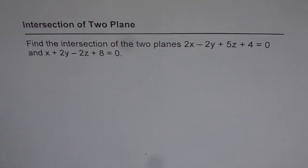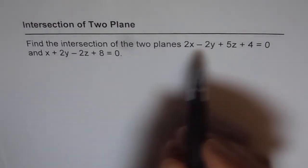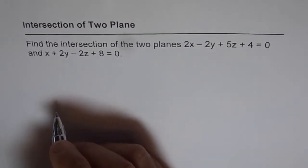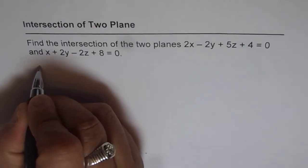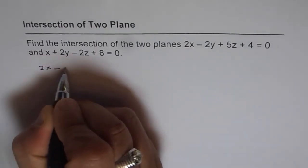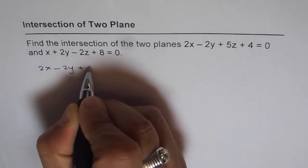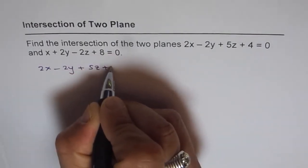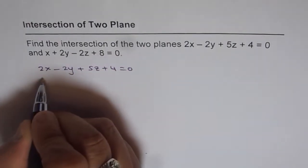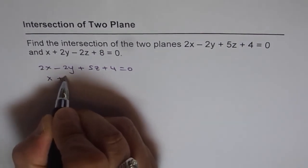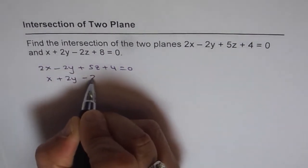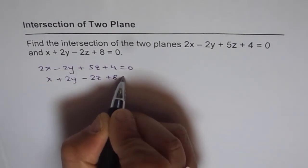To find the intersection of these two planes, we will solve these two equations simultaneously. We have equation 1: 2x - 2y + 5z + 4 = 0, and equation 2: x + 2y - 2z + 8 = 0.